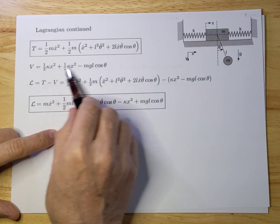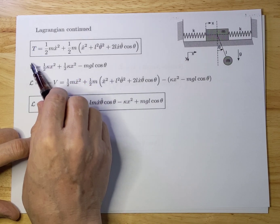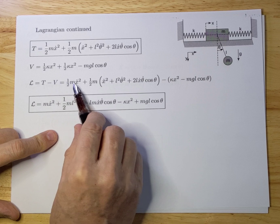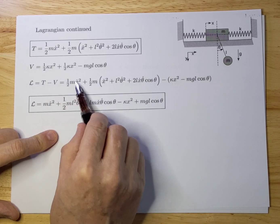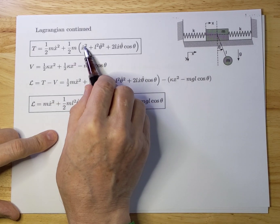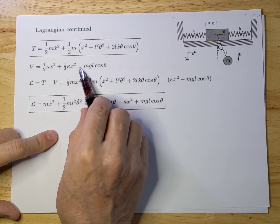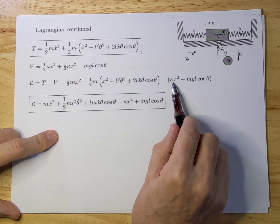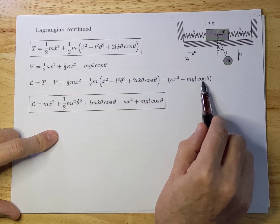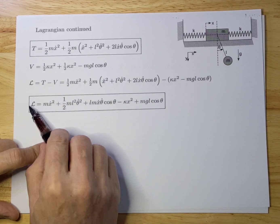Now we can subtract T and V to get the Lagrangian. We take the Lagrangian L equals T minus V. We take the kinetic energy T we already calculated, subtract the potential energy terms — including minus k x squared for both springs and minus MgL cosine theta — and we get the total Lagrangian.